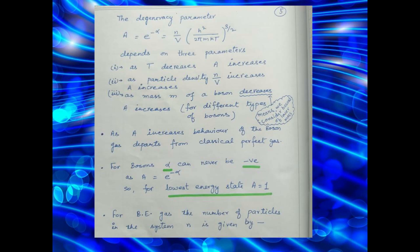The degeneracy parameter A depends upon 3 factors: temperature, particle density, and mass of the bosons. We can see from the formula that as temperature decreases, A increases. As the particle density N by V increases, A increases. And as we consider a system of bosons having lower mass values, the value of A increases. As A increases, behavior of the boson gas departs from classical perfect gas. For bosons, alpha can never be negative, as A is equal to E raised to power minus alpha. So for lowest energy state, A is equal to 1.